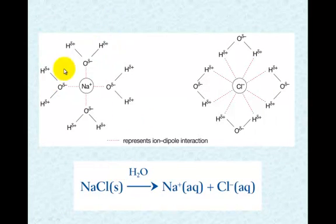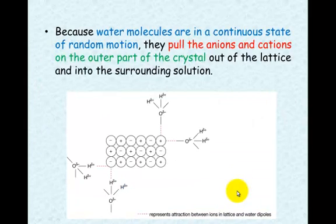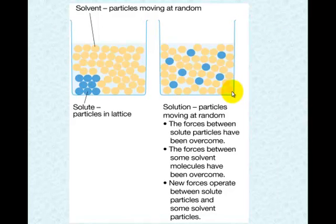We can see the ion-dipole attraction in the diagram. When we write the equation, we write it as sodium chloride dissolving in water — because water is not being used up, it's just surrounding the ions — creating sodium ions and chloride ions. Water particles are in a continuous state of random motion; they pull the anions and cations out of the outer part of the crystal until none are left. The solute eventually disperses evenly throughout the liquid.